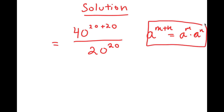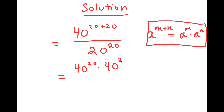So I'm going to be using this property on 40 to the power of 20 plus 20. So then that turns into 40 to the power of 20 times 40 to the power of 20 over 20 to the power of 20.